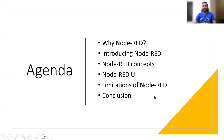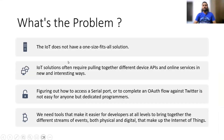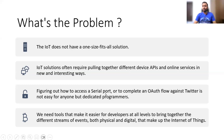What is the problem that we are going to solve with Node-RED? Generally, IoT doesn't have a one-size-fits-all solution, so we need to use different devices, their APIs, and online services in interesting ways. For example, if you want to access a serial port and also complete any kind of authorization flow — for example with Twitter — then it is not a very easy process unless you are a dedicated programmer.